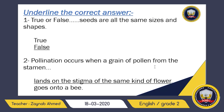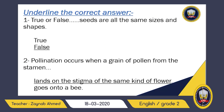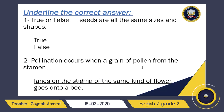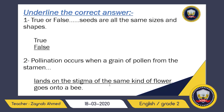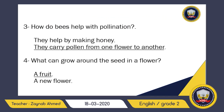Number two: pollination occurs when a grain of pollen from the stamen lands on the stigma of the same kind of flower, or goes on to a bee. Pollination happens not when pollen goes on to a bee — it happens when a pollen lands on the stigma, the sticky part of the same kind of flower.